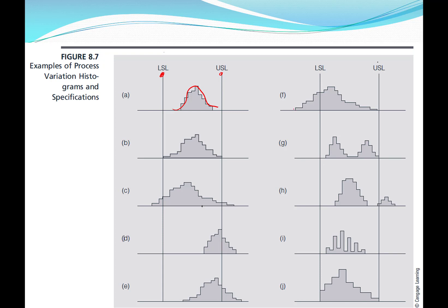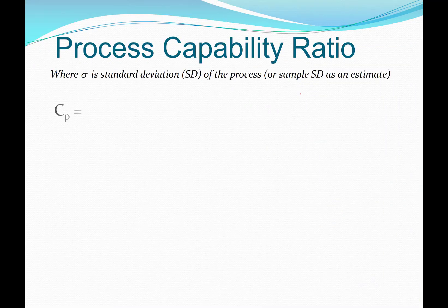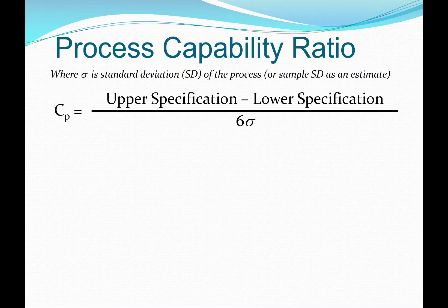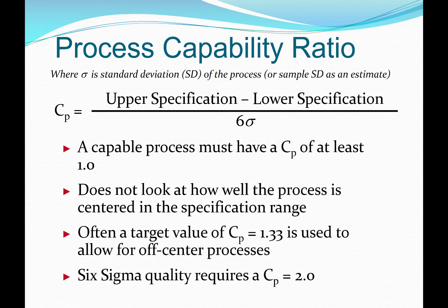Whereas in this case, the process is not capable because there is a good portion of the process output that falls outside of the spec limits. The process capability ratio can be computed by subtracting the upper and lower spec limits and dividing that difference by six sigma.